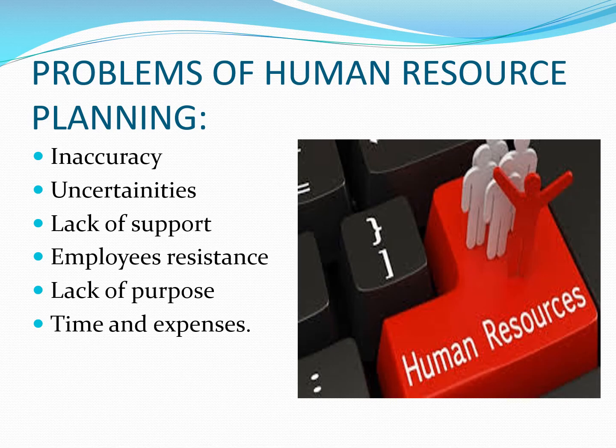Next point is lack of support. There are three levels of management — top, middle, and lower. We do not always get support from every level for the HRP planning process. If top management resists and says they will not properly follow the planning process, then middle and lower levels will also not follow it. Next point is employee resistance — employees sometimes resist the planning process due to fear that HRP will predict whether there is surplus or deficit staff, potentially affecting their jobs.